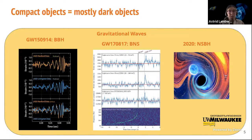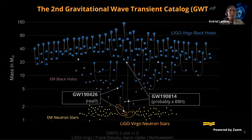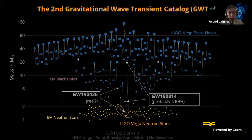We have now detected the missing binary—the mixed binary composed of a neutron star and a black hole. In this mass plot, the vertical axis shows masses, with black holes on top and neutron stars on the bottom. There is a clear separation: neutron stars mostly have masses below two solar masses, while black holes have masses of at least five solar masses. In the first gravitational wave catalogs, we had no candidate detection for a neutron star black hole binary. In the second catalog, we had two candidate events alongside 48 binary black holes and two binary neutron stars.